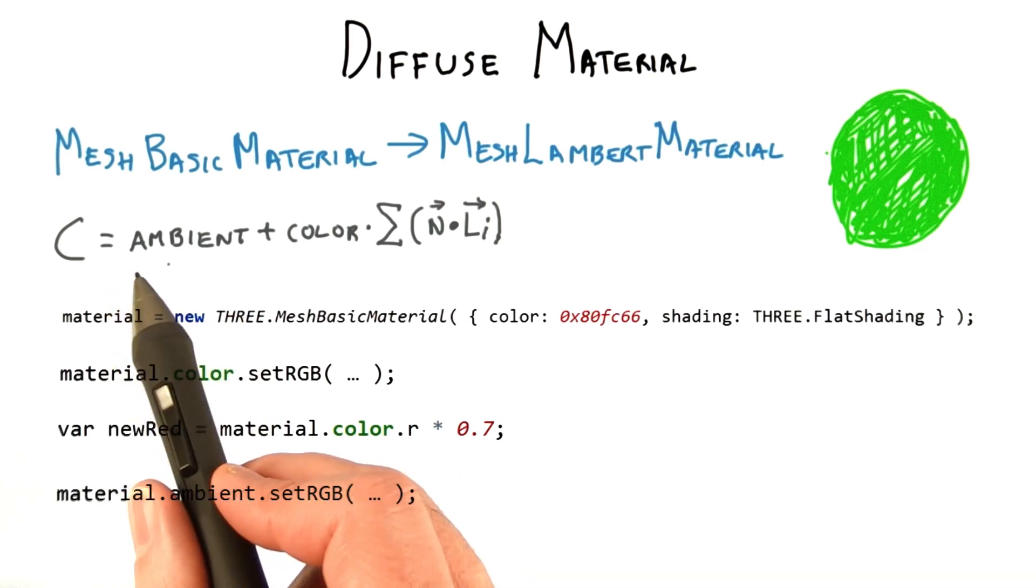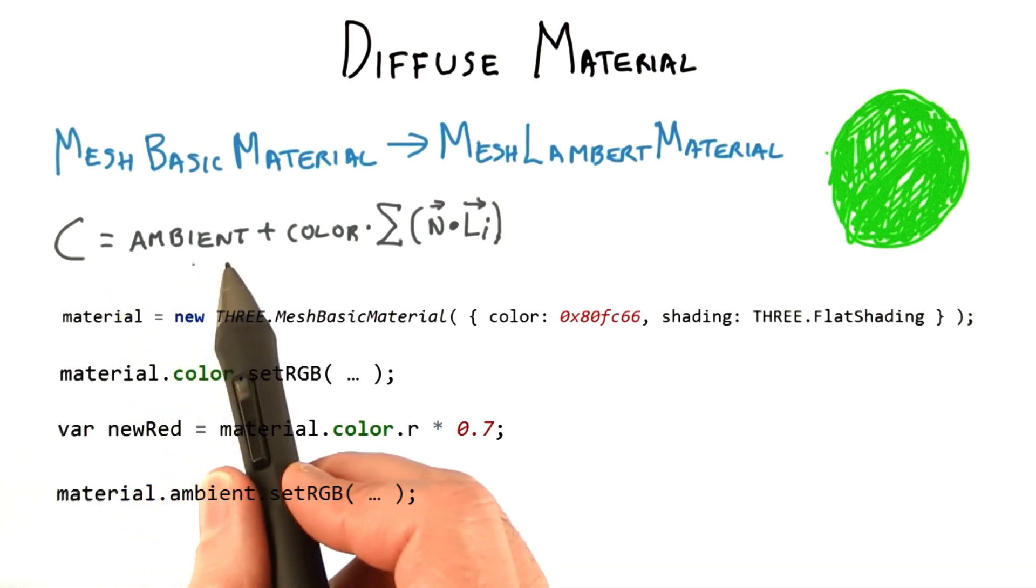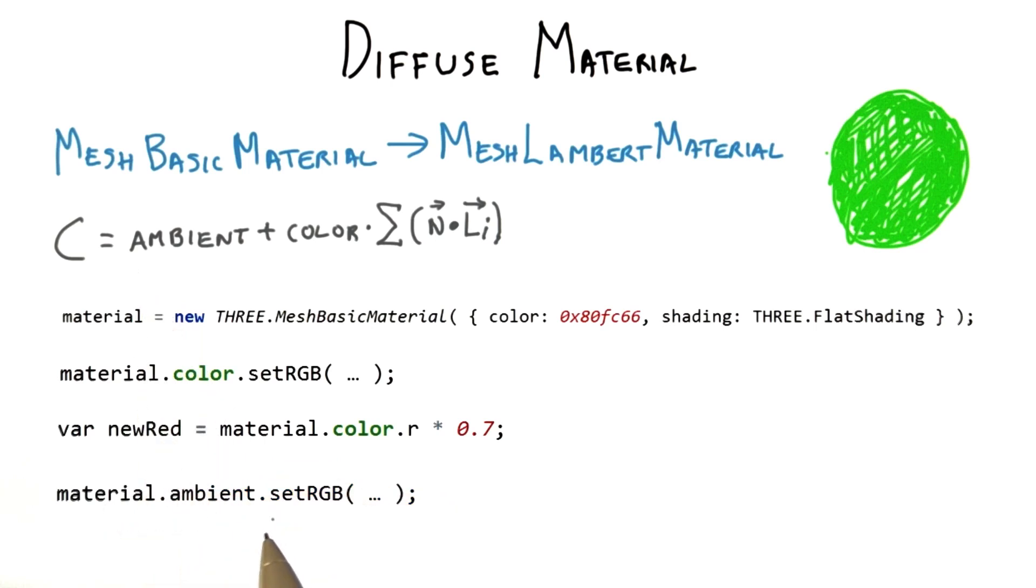This first term of the equation is the material's ambient color setting. The ambient color is called, wait for it, ambient. The ambient color is multiplied by the ambient light's color, which I've set to white. Your task is to set this ambient color to be the material color times 0.4.